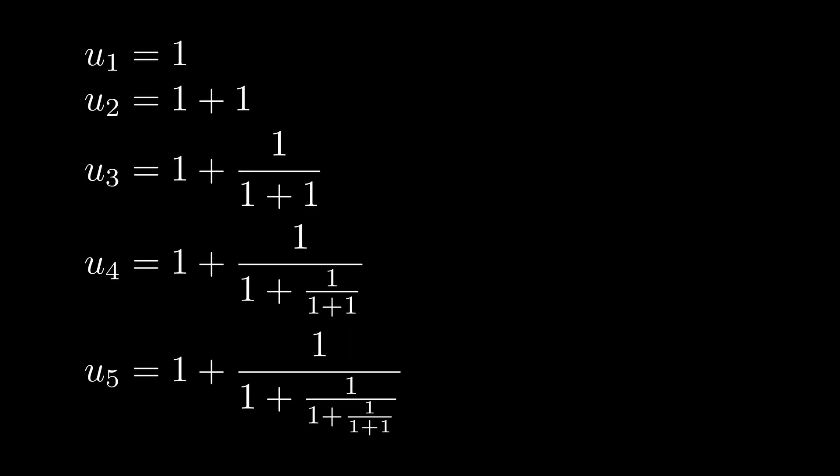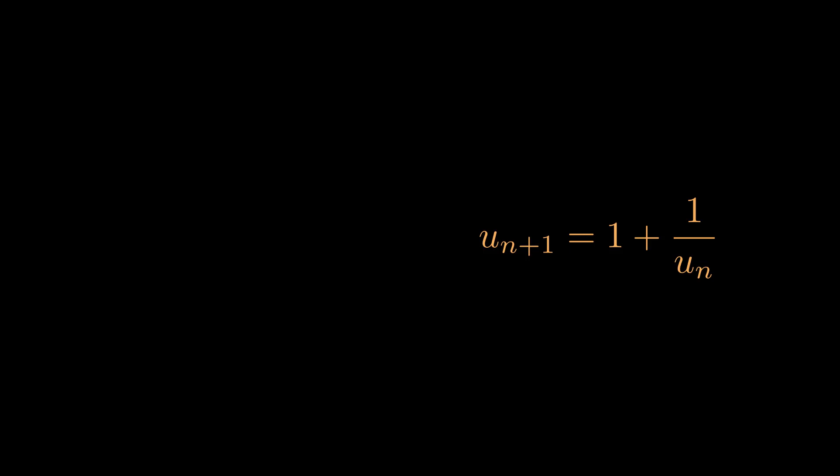We can say that u(n+1), or in other words the next term in the sequence, is just 1 plus 1 over the current term. Writing the sequence in terms of another term in the sequence is called a recurrence relationship, and this can be a lot more useful to solve the fraction.